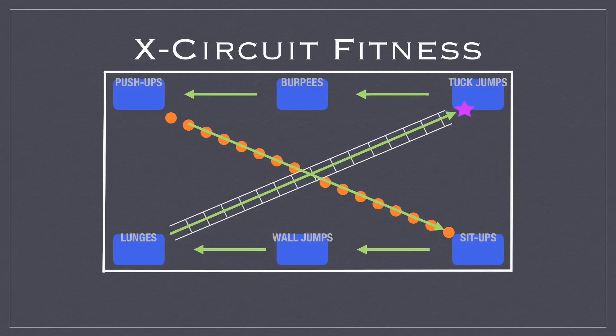Tuck jumps, 10 tuck jumps, maybe 10 burpees, and then getting back to the end of the push-ups. If the two minutes is still going, if there's still time, then the student would continue again, so going through it over and over again. And that's the basic idea for X-Circuit.